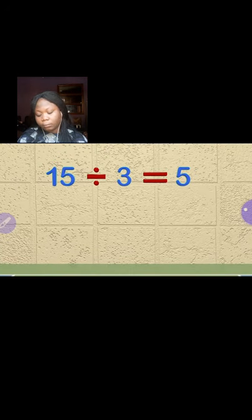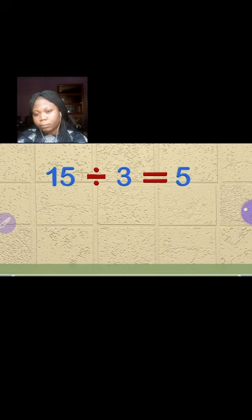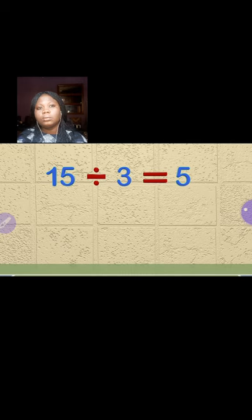Here is a division problem, and just like multiplication, the numbers used in division have certain names. Today we are going to learn the names we use to describe these. Unlike multiplication, all three numbers have separate names — do not worry, because we will practice with all three. The 15 in this equation is called the dividend.